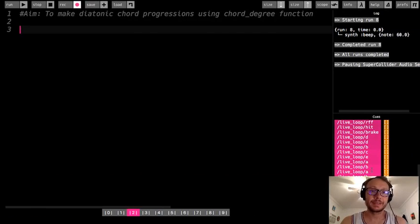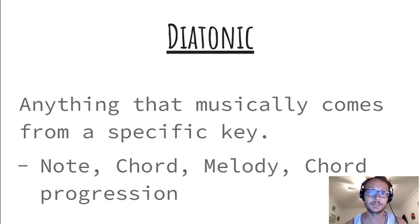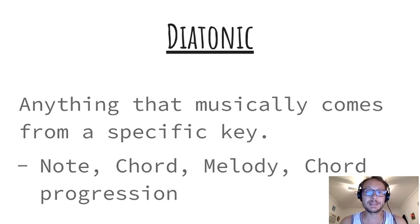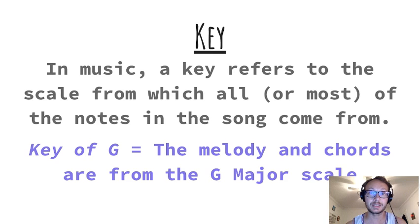In this video we are going to make diatonic chord progressions using the chord degree function. First, I want to talk a little bit about what diatonic means in relation to chord progressions. Diatonic basically means anything that musically comes from a specific key — so this could be a note, chord, or melody.